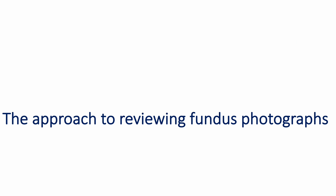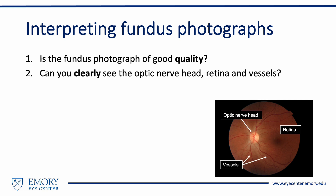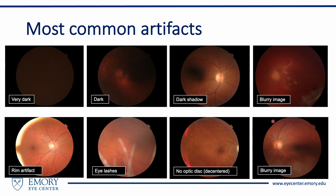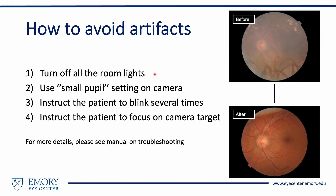In this section, we will describe a systematic approach to reviewing fundus photographs. Are the photographs of good quality? Are you able to visualize the optic nerve head, the retina, and the vessels clearly? These are some common artifacts that can impede interpretation of fundus photographs, commonly seen in patients with physiologically small pupils or media opacities. One can improve picture quality by turning off room lights, using the small pupil setting on the camera, instructing the patient to blink, and instructing the patient to focus on the camera target.